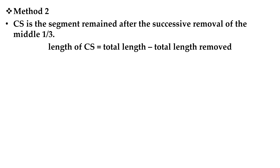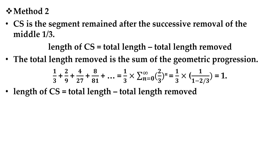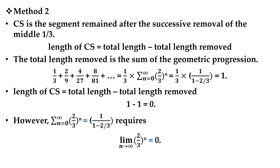There is also Method 2. The Cantor set is the segment remaining after successive removal of the middle one-third. Thus, the length of the Cantor set is total length minus total length removed. The total length removed is the sum of a geometric progression. Thus, the length of the Cantor set is 1 minus 1 equals 0. However, this requires limit (2/3)^n equals 0, so Method 1 and Method 2 are essentially the same.